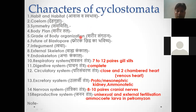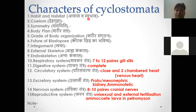Bilateral symmetry means there are three germinal layers: ectoderm, mesoderm, and endoderm. The body plan is a tube-within-tube type, present from mouth to anus. The grade of organization is organ-system grade. Regarding the fate of the blastopore: if the blastopore becomes the anus, they are deuterostomes — such as Echinodermata and Chordata. If it becomes the mouth, they are protostomes — such as Annelida, Arthropoda, and Mollusca.